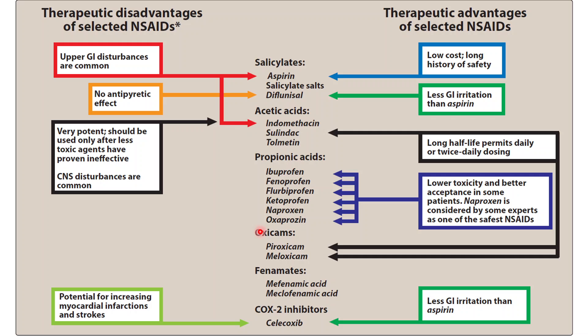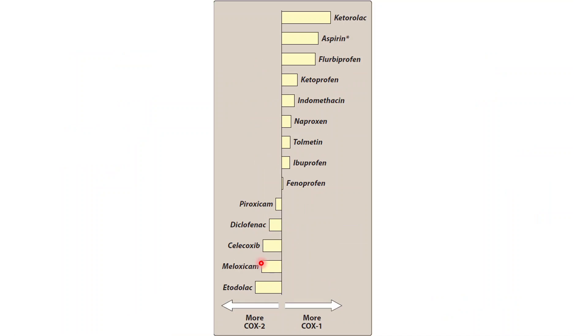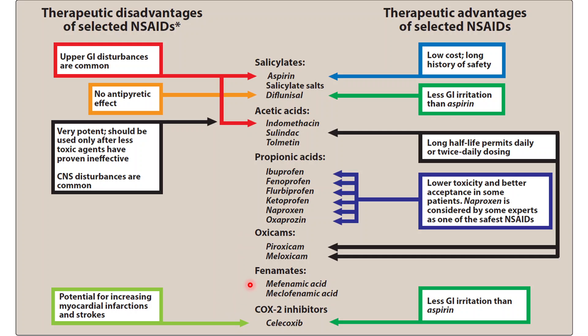Propionic acid derivatives include ibuprofen and its derivatives; these have lower toxicity and better patient acceptance — most patients prefer ibuprofen. Naproxen is one of the safest. Oxicams include meloxicam and piroxicam, which are COX-2 selective. Fenamates are newer, with less information known about them.